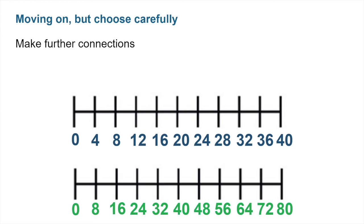For example, can you see that 1 lot of 8 is double 1 lot of 4? Why might this be? Does this work at other points on the number line too? Try looking at 5 lots and 10 lots, as these are easier to double.